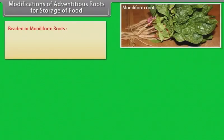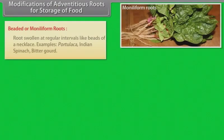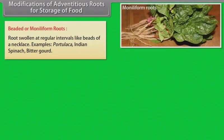Beaded or moniliform roots: Roots swollen at regular intervals like beads of a necklace. Examples: Portulacca, Indian spinach, bitter gourd.